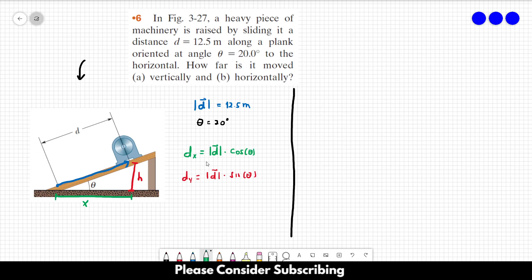So if we want to find x, which is dx, x is equal to 12.5 times the cosine of 20 degrees, and this is equal to 11.7 meters. This is the answer of letter B.